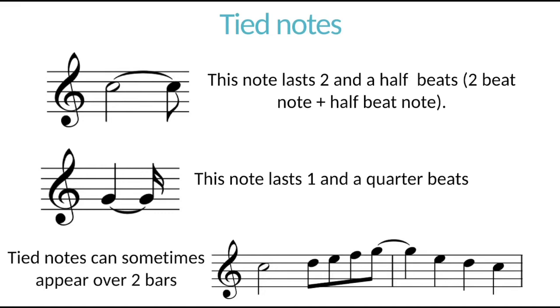And again, sometimes tied notes happen over a bar. So for example, this note lasts one and a half beats. It's also, of course, an example of syncopation too. But one and a half beats it's there. But we can't fit one and a half beats more into this bar. Hence the tie.